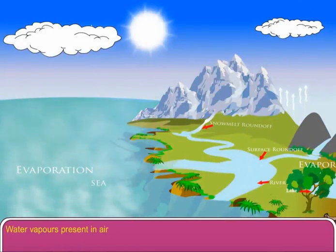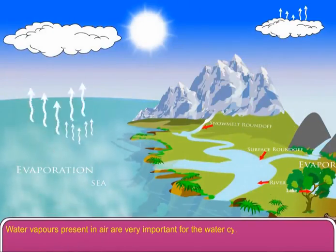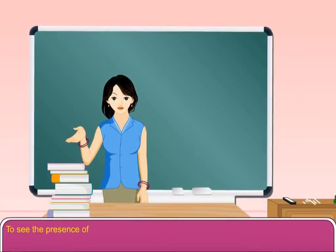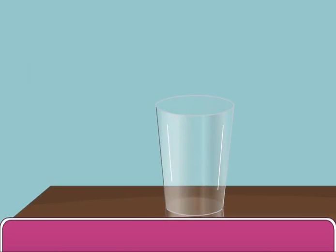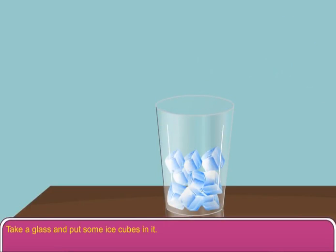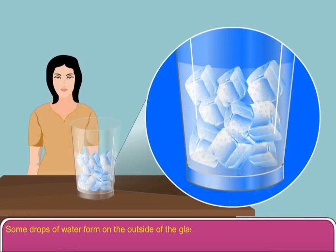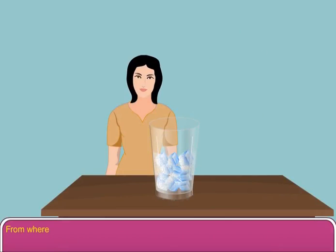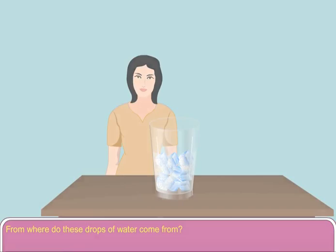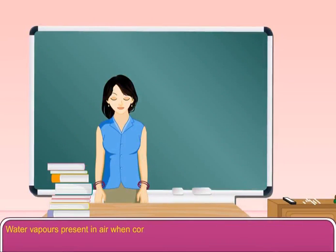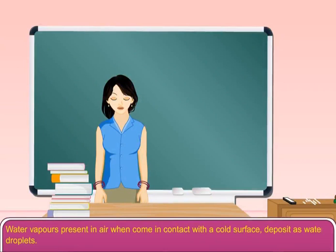Water vapors present in air are very important for the water cycle in nature. To see the presence of water vapor in air, let us perform an experiment. Take a glass and put some ice cubes in it. Leave it for some time. Some drops of water form on the outside of the glass. Water vapors present in air, when they come in contact with a cold surface, deposit as water droplets. This shows the presence of water vapor in air.